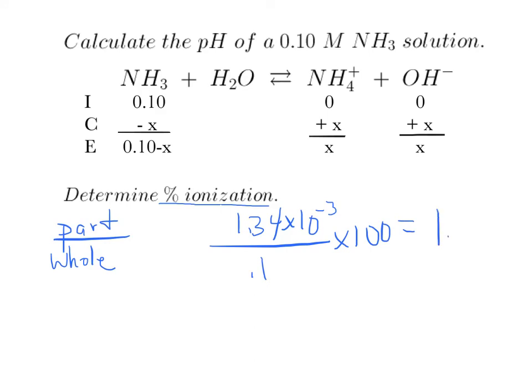and I end up with 1.3 percent ionized. Since that's well under the 5 percent rule, then that means that assumption that we made about X being negligible is a valid assumption, and we got 1.3 percent.